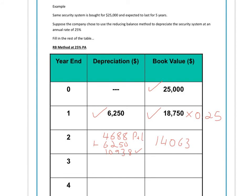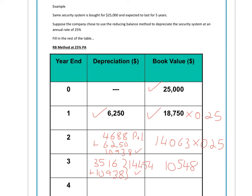Going into year three, we multiply $14,063 by 25%, giving a depreciation of $3,516. Adding that to the prior total depreciation of $10,938 gives overall accumulated depreciation of $14,454, leaving a net book value of $10,548. You can see the annual depreciation reducing: $6,250 in year one, $4,688 in year two, and $3,516 in year three.